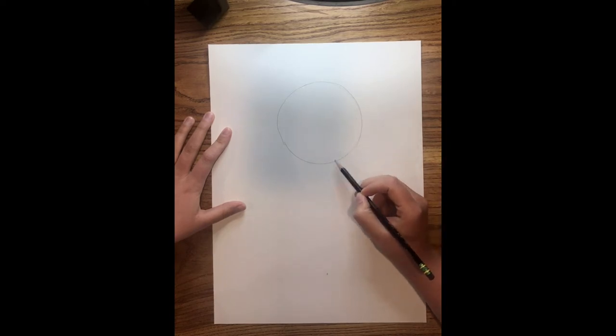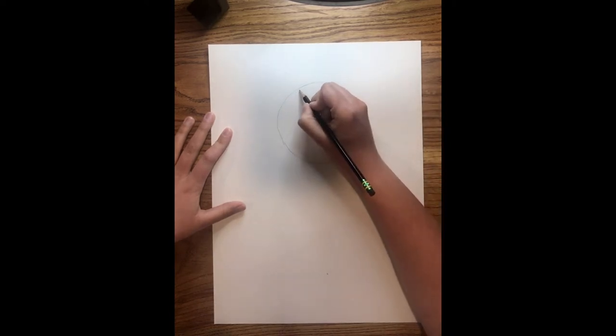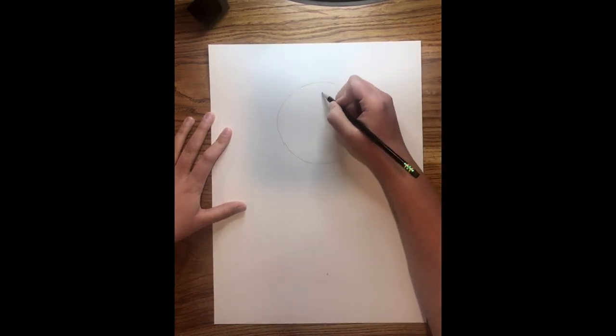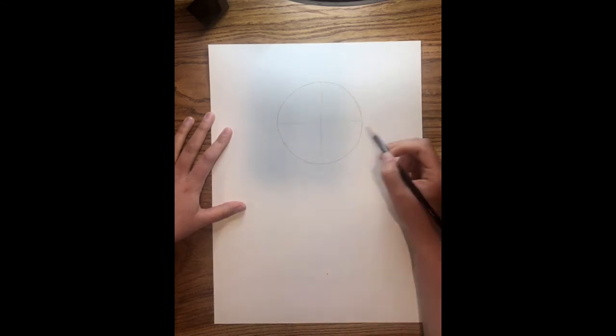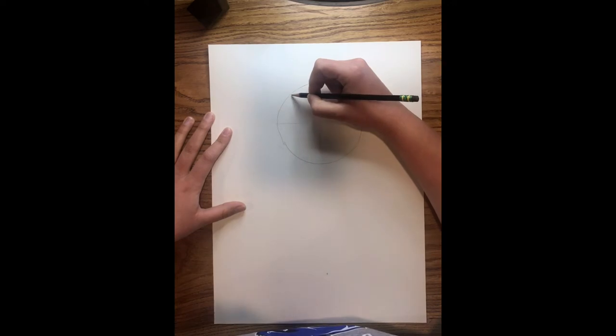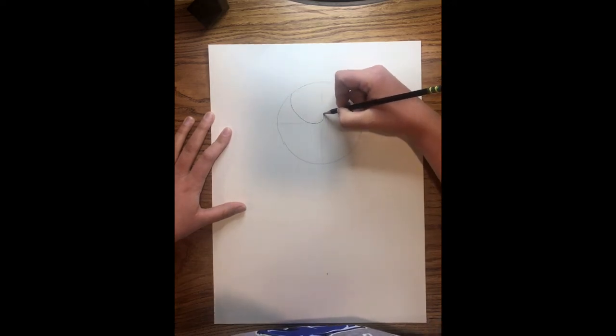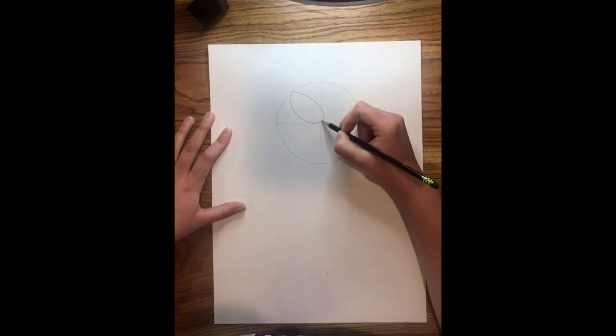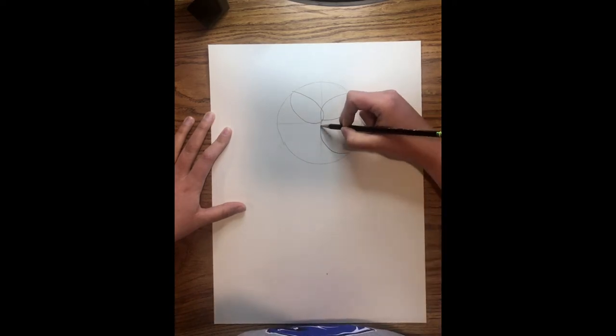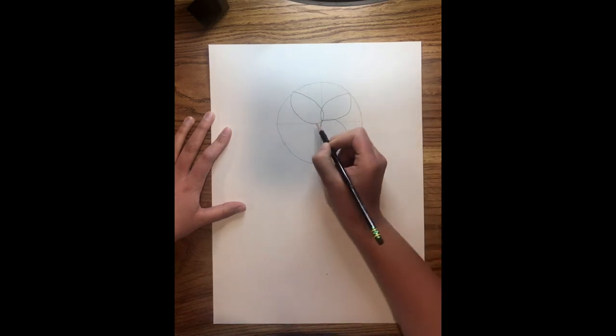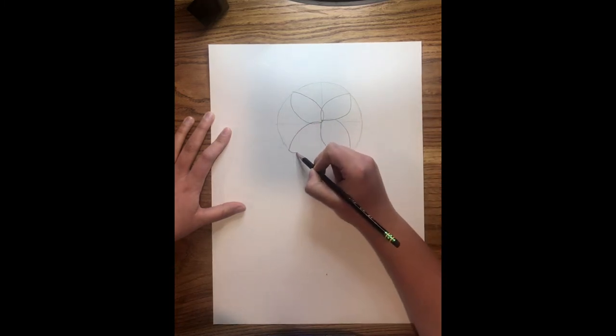So we're actually going to put a very light horizontal and vertical line in here just like this. This is going to help us get our radial design. So right here in the center, I'm making a teardrop shape and I want the round parts to touch right in the middle of my circle just like this.